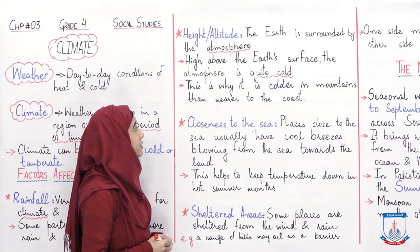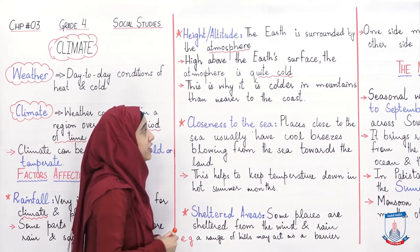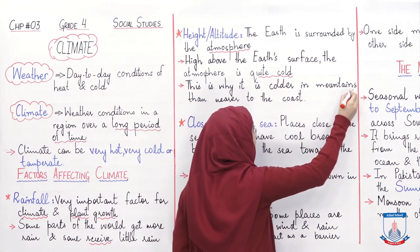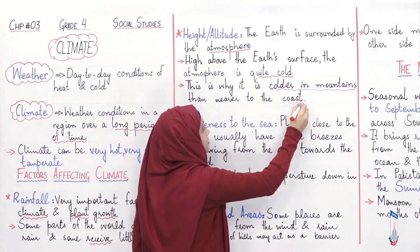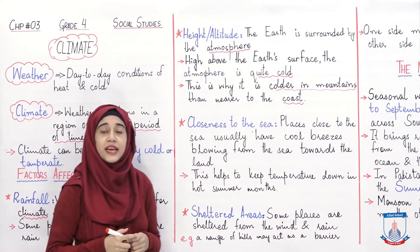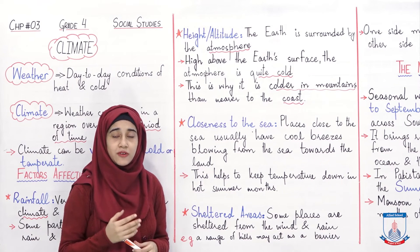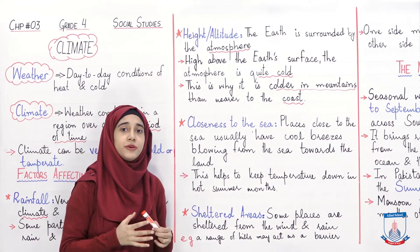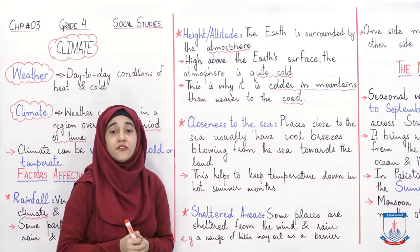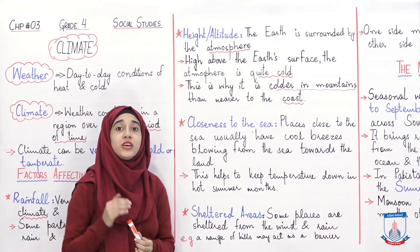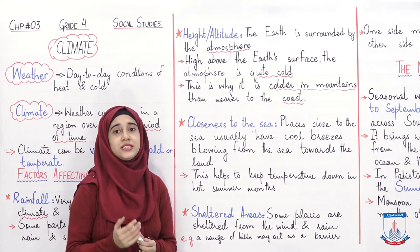This is why it is colder in mountains than nearer to the coast. اسی وجہ سے جو پہاڑی علاقے ہوتے ہیں وہاں پر ٹھنڈ زیادہ ہوتی ہے as compared to the coastal areas. ساحلی علاقوں میں اتنی زیادہ ٹھنڈ نہیں ہوتی — وہاں کا موسم بہتر ہوتا ہے. پہاڑی علاقوں میں ٹھنڈ زیادہ پڑتی ہے کیونکہ وہ علاقے height پر ہوتے ہیں.